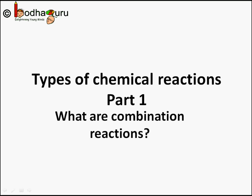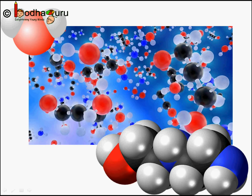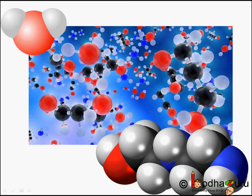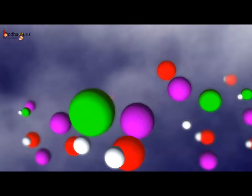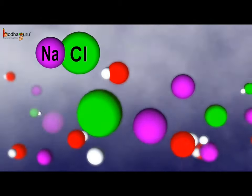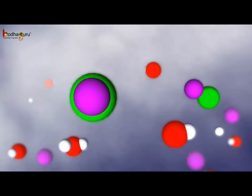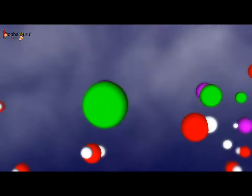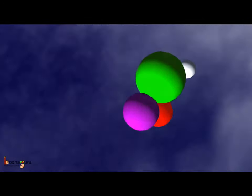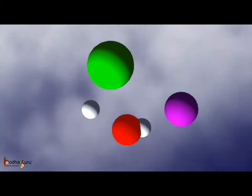Now we know a lot about chemical reactions and we also know how to write chemical reactions correctly. The important thing to remember about chemical reactions is that they only involve breaking and making of bonds between atoms to produce new substances. Hence atoms of one element do not change into those of other elements, nor do atoms disappear from a mixture or appear from elsewhere.